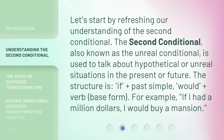Let's start by refreshing our understanding of the second conditional. The second conditional, also known as the unreal conditional, is used to talk about hypothetical or unreal situations in the present or future. The structure is: if plus past simple, would plus verb base form. For example, if I had a million dollars, I would buy a mansion.